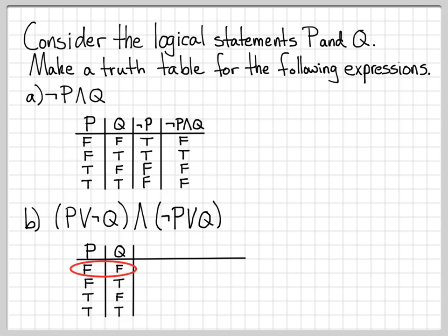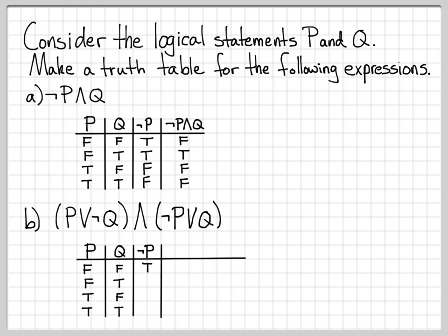We always start with all false and work our way to all true. Now we need to look at our logical expression and start making columns for things that will be useful. One of the things in our expression is 'not P', so I'll make a column for that and fill it in. A false turns into a true, false turns into a true, a true turns into a false, and a true turns into a false.